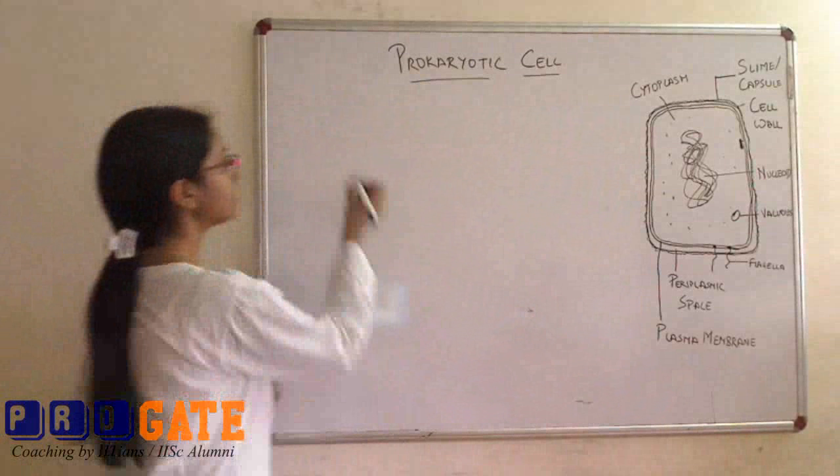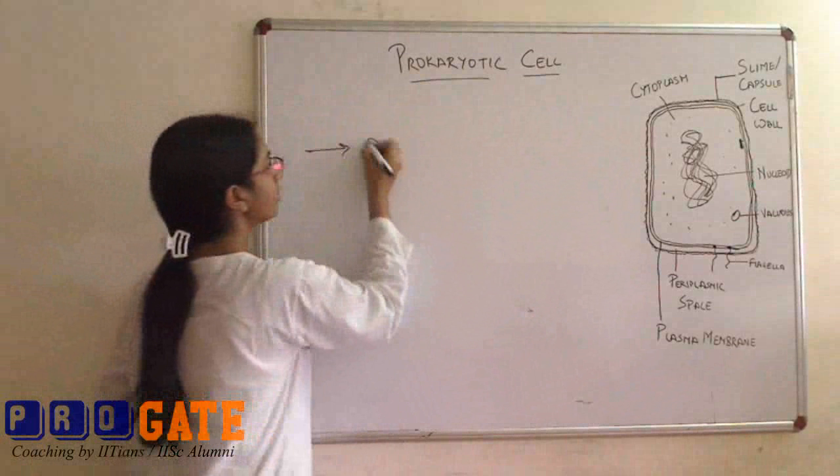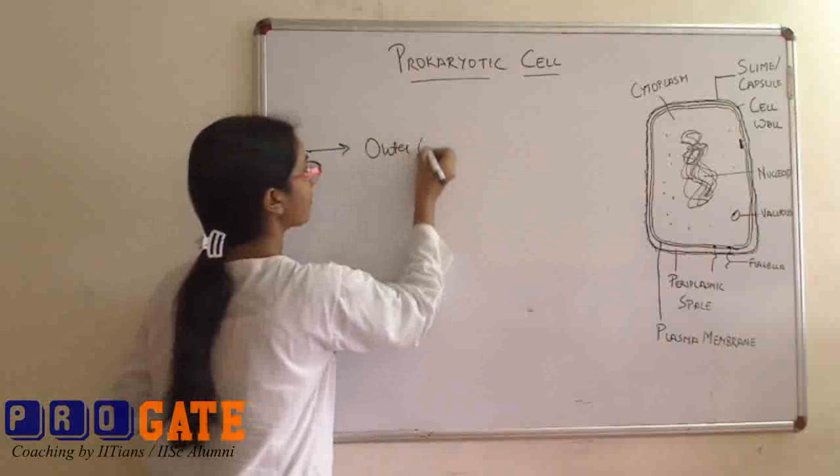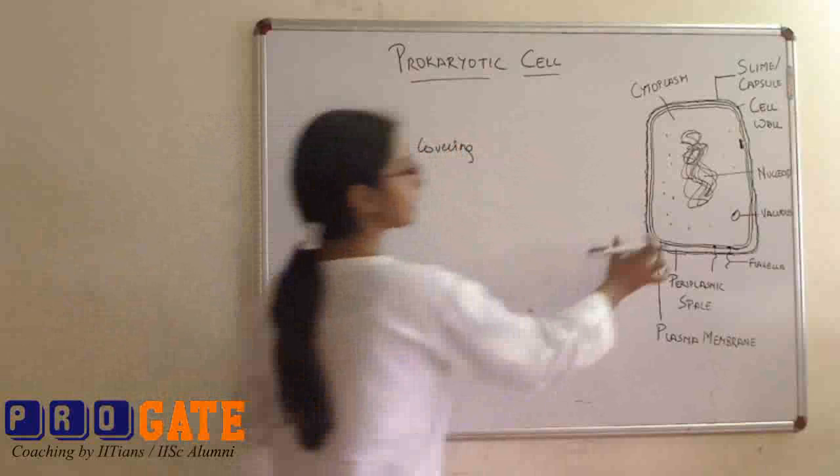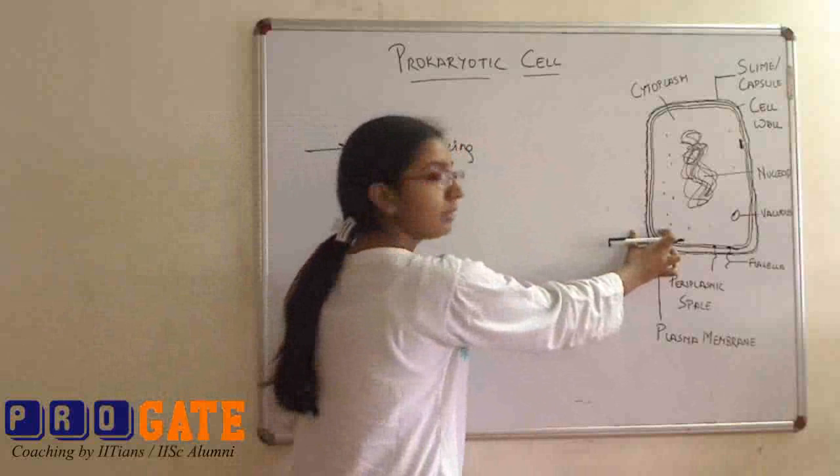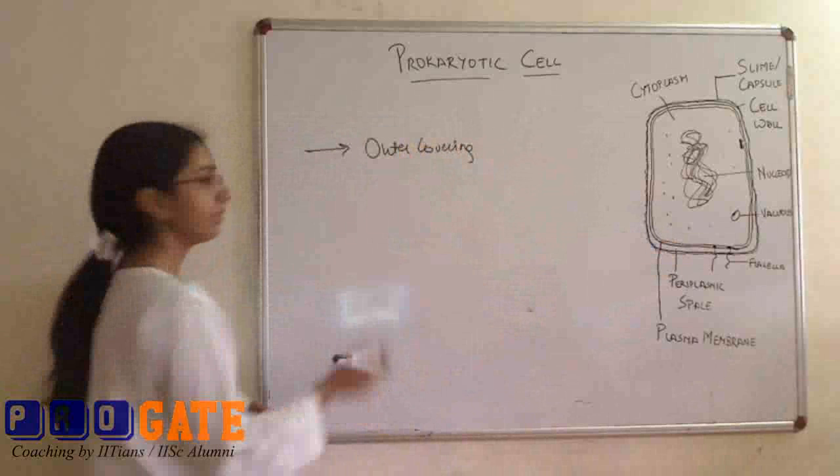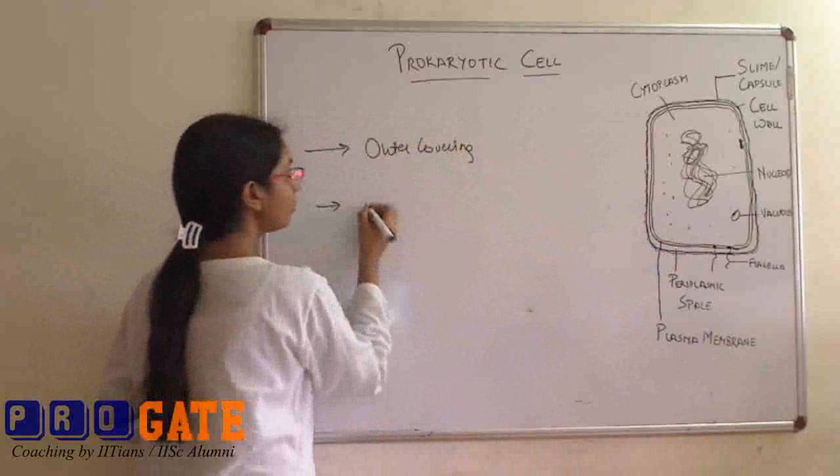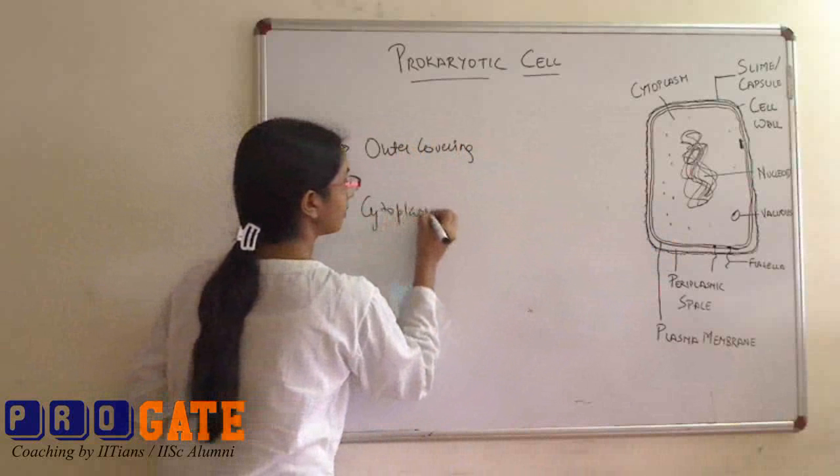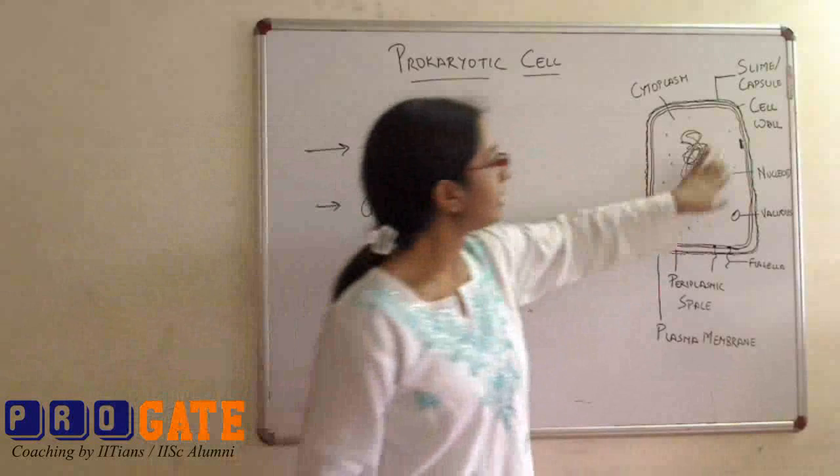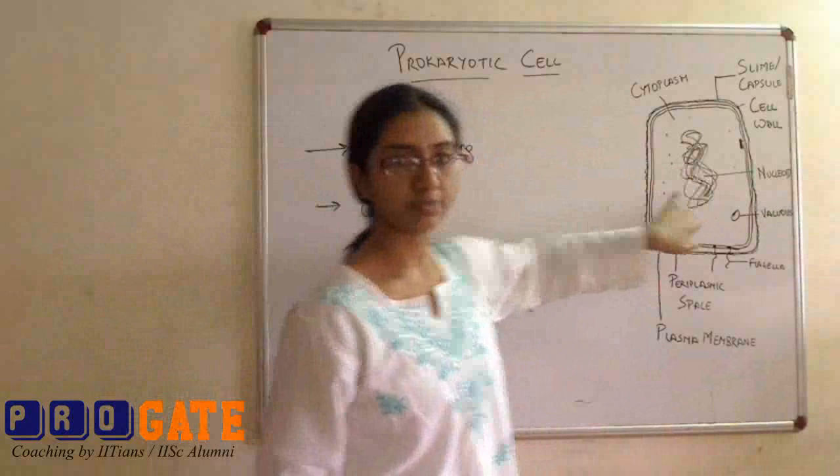What are the three basic things? The first is the outer covering. In this case, this entire portion would be covered into your outer covering. Then you would have your cytoplasm. Everything inside this outer covering, this is cytoplasm.